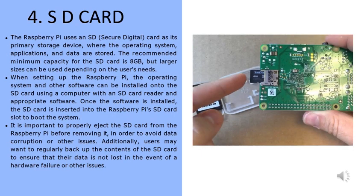The fourth part is the SD card. The Raspberry Pi uses an SD card as its primary storage device, where the operating system, applications, and data are stored. The recommended minimum capacity for the SD card is 8 GB, but larger sizes can be used depending on the user's needs. When setting up the Raspberry Pi, the operating system and other software can be installed onto the SD card using a computer with an SD card reader and appropriate software.